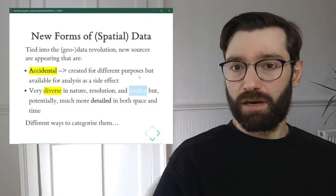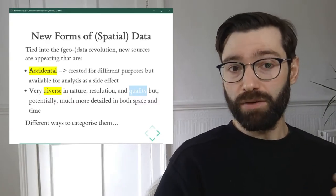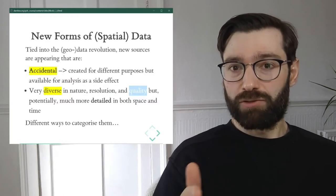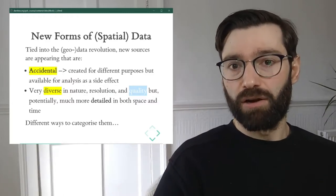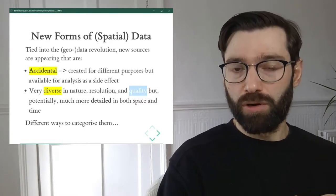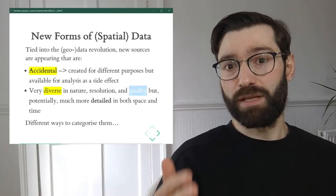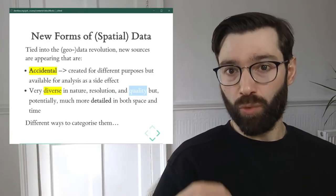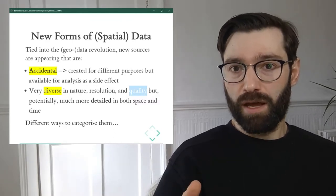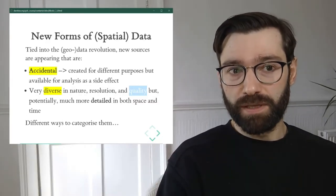And most importantly, they're very diverse in terms of quality. Some sources are very reliable and unbiased, while others come with very unique biases. The quality check that traditional social scientists are used to — traditionally offloaded to agencies like the Census Bureau or the Office of National Statistics — is not there. That means the researcher needs to be much more aware and pay much more attention to quality control aspects of using data.